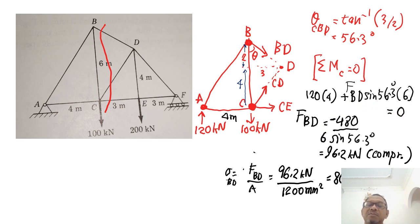Okay. Now we move to the next one. So this is number three. Number three is shown here. The question goes like this. Part of the landing gear of a light plane is shown below. Determine the compressive stress in the strut AB caused by a landing reaction R equals to 20 kN. So when the aircraft lands, light plane lands, you have a reaction force of 20 kN. And we've got the strut inclined at 53.1 degrees with BC. So it's 53.1 degrees here. Neglect weight of members. So they are light enough to be neglected. So the distance R to C is 200 plus 450.